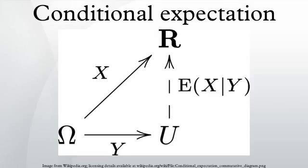Monotone convergence: if Xₙ ↑ X, then E[Xₙ|G] ↑ E[X|G]. Dominated convergence: if Xₙ → X and |Xₙ| ≤ Y with E[Y] < ∞, then E[Xₙ|G] → E[X|G]. Fatou's lemma: if Xₙ ≥ 0, then E[lim inf Xₙ|G] ≤ lim inf E[Xₙ|G]. Jensen's inequality: if φ is a convex function, then φ(E[X|G]) ≤ E[φ(X)|G]. Conditional variance: using the conditional expectation we can define, by analogy with variance as the mean squared deviation from the average, the conditional variance. This includes the algebraic formula for variance and the law of total variance.